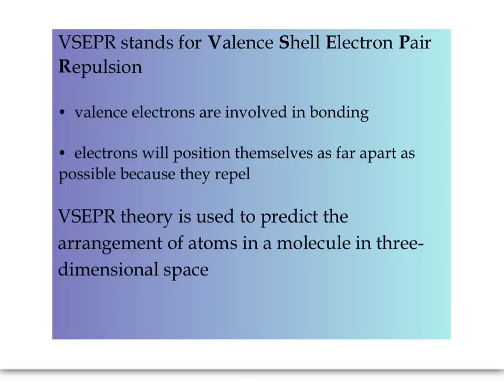Because electrons are negatively charged, they repel one another and will want to position themselves as far apart as possible. We use VSEPR theory to predict the arrangement of atoms in a molecule in three-dimensional space. Basically, we're talking about the shapes of molecules.